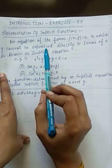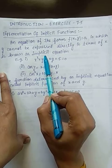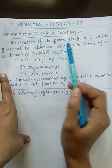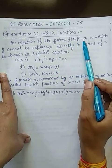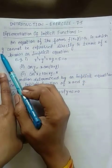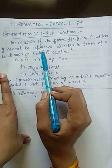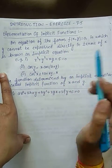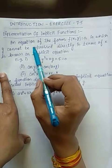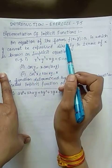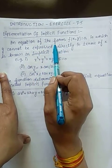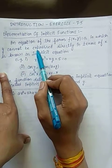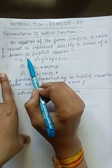Implicit function se pahle hamei karna implicit equation kya hoti hai. An equation of the form f(x,y) = 0 in which y cannot be expressed directly in terms of x. Aise equation jis me x aur y dono involved honge lekin y ko hame directly x ki form me express nahi kar paenge.